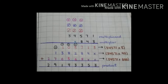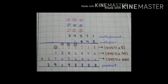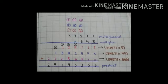You know start kareenge. Students, 3 ke neeche hamare paas koi number nahi hai, toh hum 3 ko as it is write kareenge neeche. Now hum next place pe move kareenge — we have 2 numbers: 1 and 4, so 1 plus 4 is 5, aap 5 ko neeche write kareenge. Next place: 3 numbers — 7 plus 8 plus 8 is 23. So 3 ko neeche write kareenge and 2 ko carry deenge next place pe.